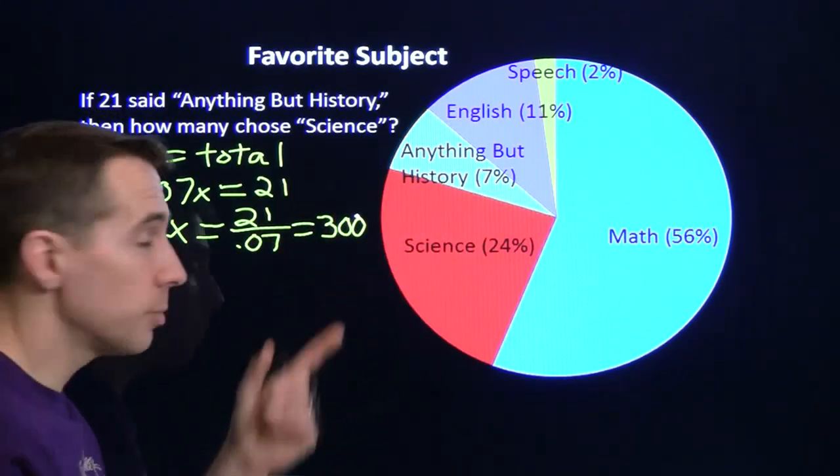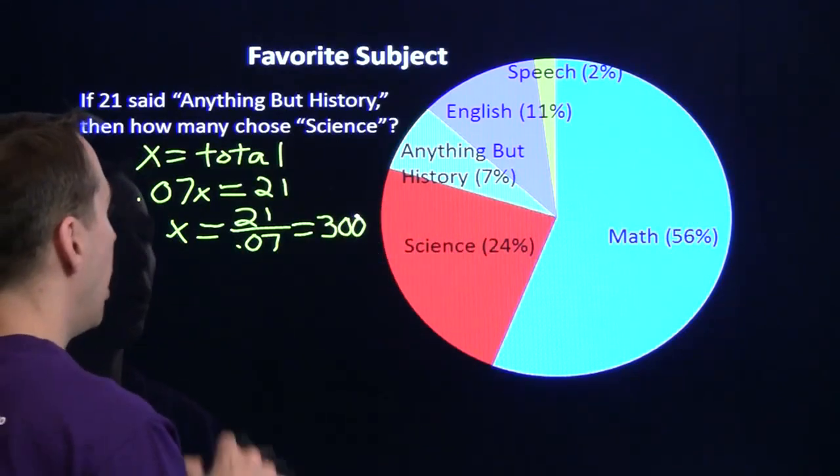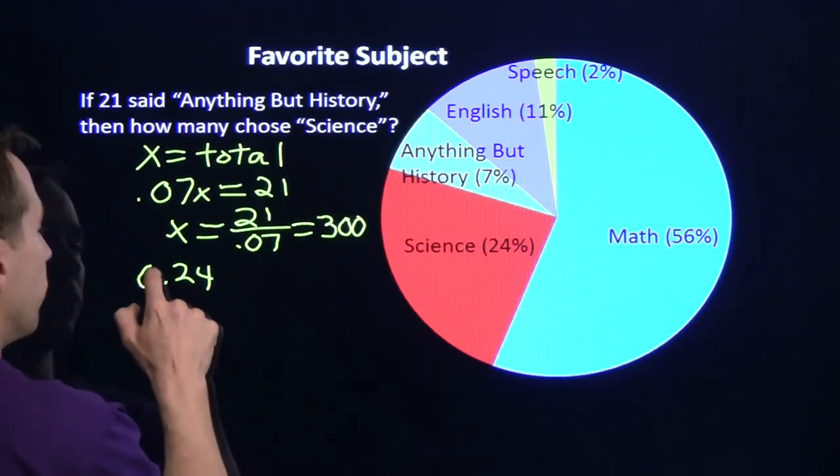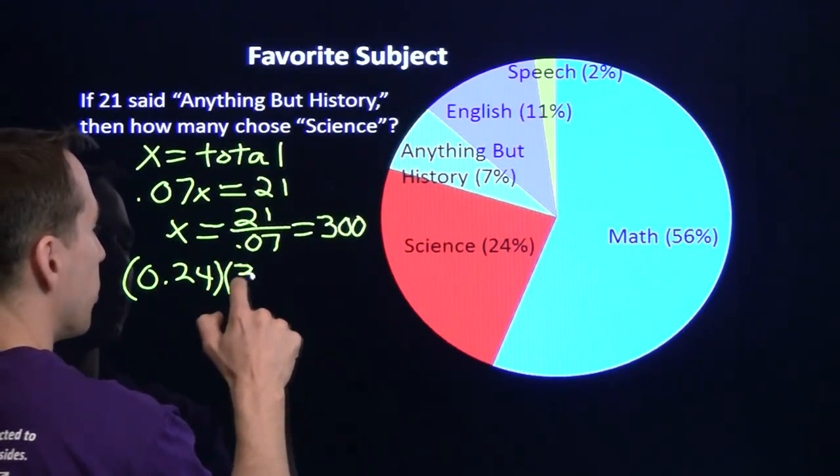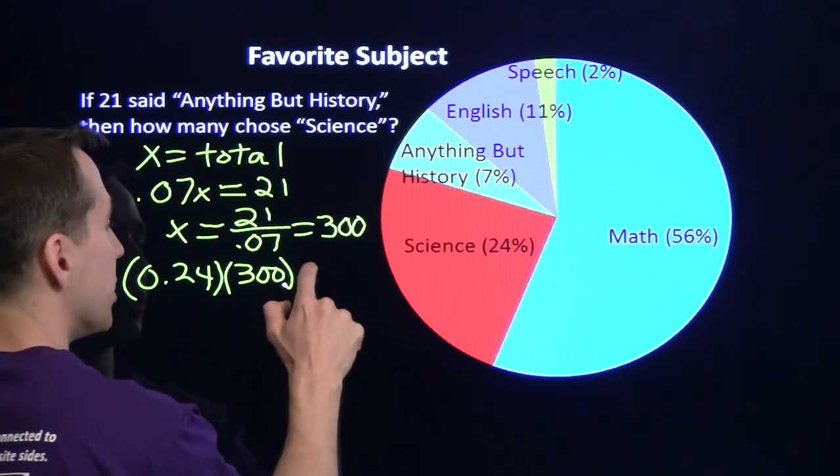So once you know that there are 300 total, 24% of them said science. So 24% of 300 is .24 times 300. 3 times 24 is 72.